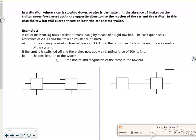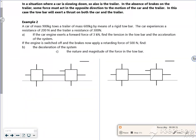So it says a car of mass 900 kilos, so 900g, we take that as a car is towing a trailer of mass 600 kilos, 600g, by means of a rigid tow bar.